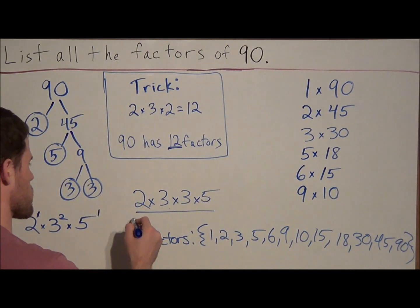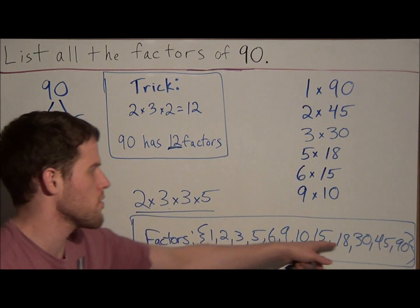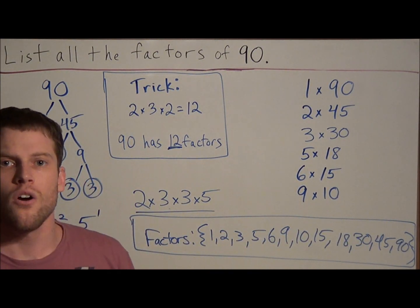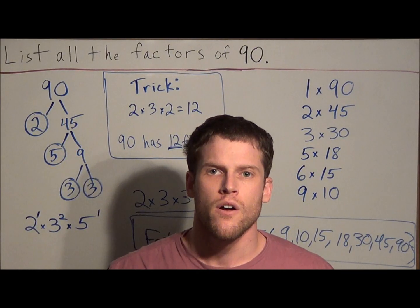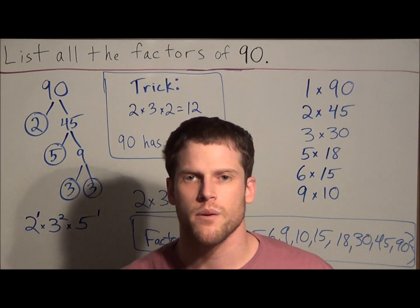So this is our final answer here. And we know that this answer is right using our trick, because we have 12 factors in this set. Okay, well this is going to conclude this video on using a cool trick for factoring. Thank you all for watching, and I hope that this was helpful.